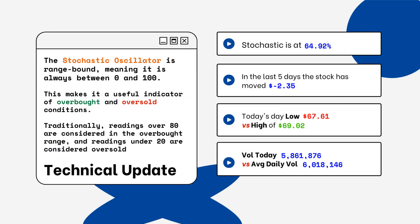You can see on the right side where the stochastic level is on this particular stock. This is a technical update so you want to look for overbought and oversold conditions. Readings over 80% are considered overbought, and readings below 20% are considered oversold. You want to be aware of this when looking at a particular stock.